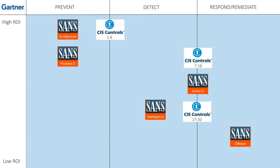Getting back to the matrix, we can now add in the CIS controls. Instead of splitting them into each individual control, I split them by their high-level grouping: basic, foundational, and organizational. The basic controls are most closely aligned with the architecture phase. The foundational controls are more advanced and split between passive and active defense. The organizational controls fall near the bottom, as it takes a really mature security organization to effectively implement them, similar to the intelligence phase.